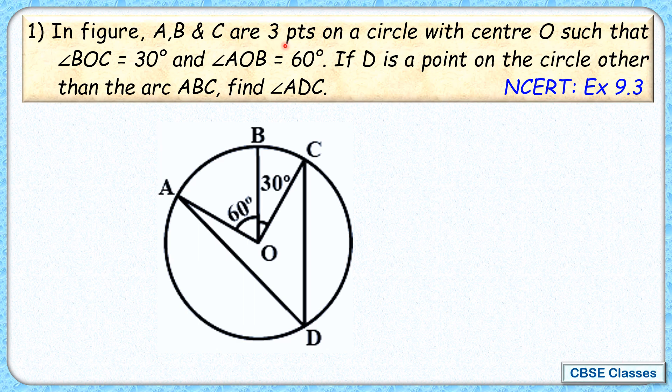Given is ABC which is three points on the circle with center O. These are three points on the circle with center O such that angle BOC is 30 degrees and angle AOB is 60 degrees.